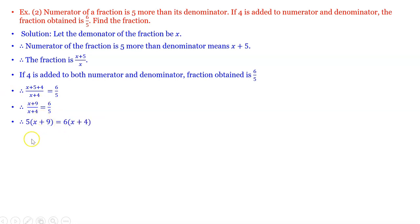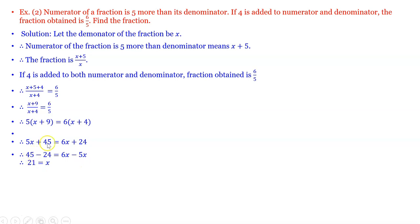By cross multiplication: 5(x plus 9) is equal to 6(x plus 4). Therefore 5x plus 45 equals 6x plus 24. Simplifying: 45 minus 24 is 21, and 6x minus 5x is x. Therefore x is equal to 21. So the denominator of the fraction is 21.